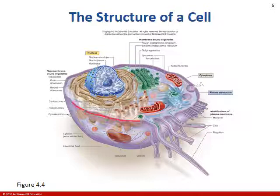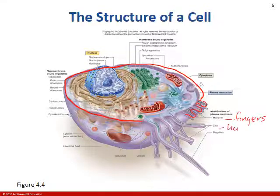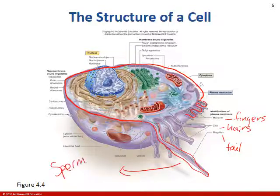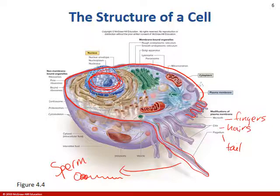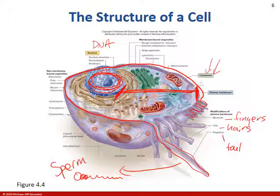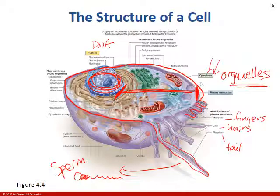Here's an image of the structure of a cell. The plasma membrane wraps around and can fold on itself. Microvilli are like fingers, cilia are like hairs, and flagella or flagellum is like a tail. Sperm are the only cells in the human body that have a flagellum — a whip-like tail to navigate the female reproductive tract. The nucleus contains DNA. Anything between the nucleus and the plasma membrane is cytoplasm, and embedded in that jelly-like cytoplasm are organelles.